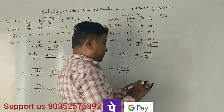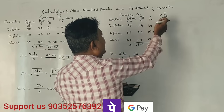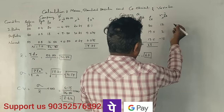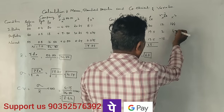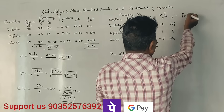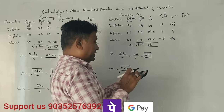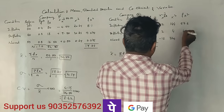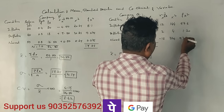Now finding x deviations: 75 minus 63 equals positive 12; 65 minus 63 equals positive 2; 45 minus 63 equals negative 18. Then x squared values are 144, 4, and 324. Calculating fx squared: 0.4 × 144 equals 57.6; 0.3 × 4 equals 1.2; 0.3 × 324 equals 97.2.